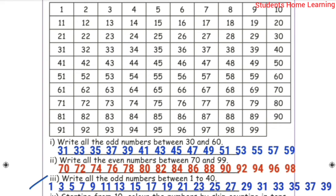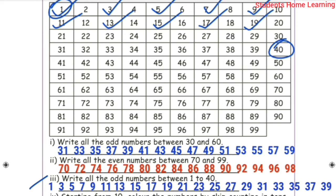Third question: Write all the odd numbers between 1 and 40. 1 is an odd number, so we start from 1. The odd numbers are: 1, 3, 5, 7, 9, 11, 13, 15, 17, 19, 21, 23, 25, 27, 29, 31, 33, 35, 37, 39. Note that 41 is even — that is why we stop at 39.